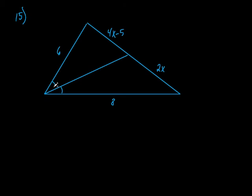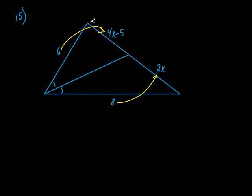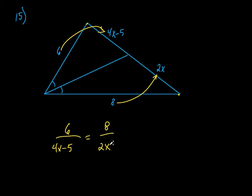So what do we do? We make some comparisons. Let's compare 6 to 4x minus 5, and then compare 8 to 2x. You could also go 6 to 8 and 4x−5 to 2x — it works either way. I decided to go from here to here because they connect. So the proportion is: 6 over (4x minus 5) equals 8 over 2x. That's all the geometry — the rest is just algebra.